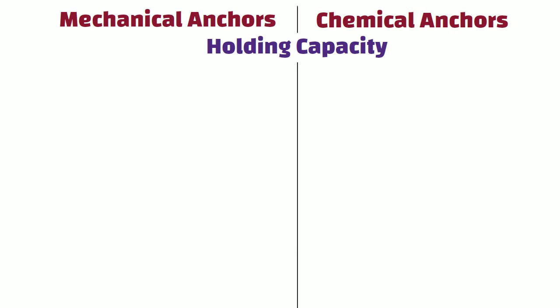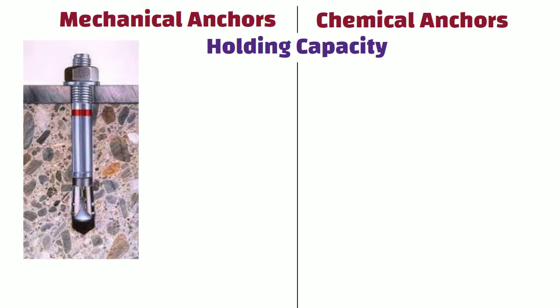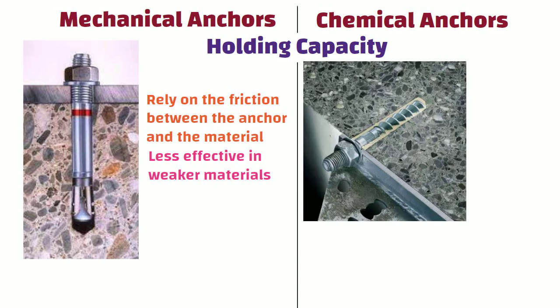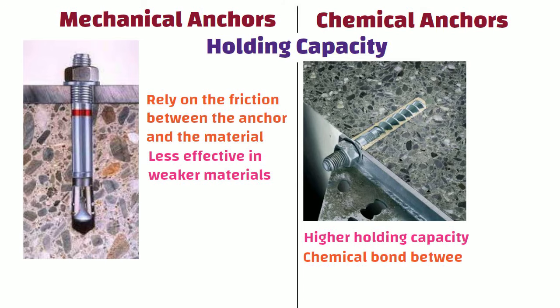Holding Capacity: Mechanical anchors rely on the friction between the anchor and the material and may be less effective in weaker materials, whereas chemical anchors generally have a higher holding capacity than mechanical anchors due to the strength of the chemical bond between the anchor and the material.